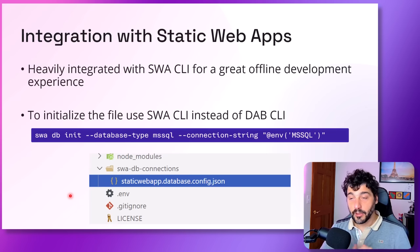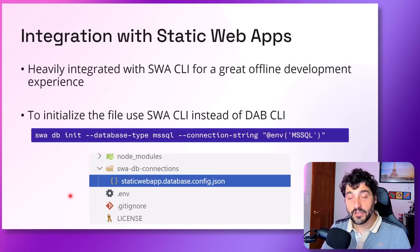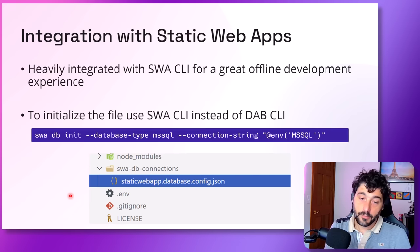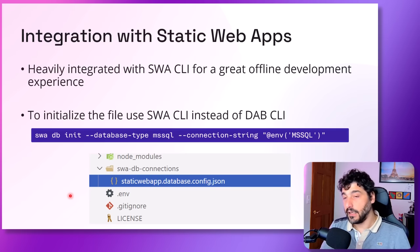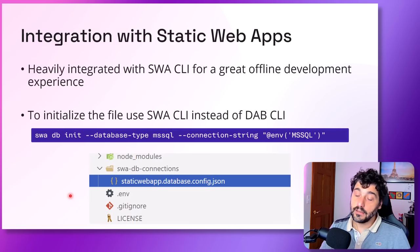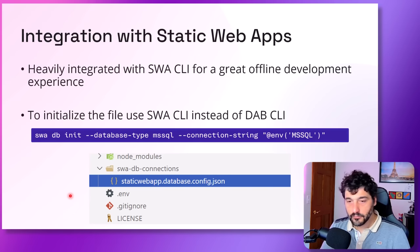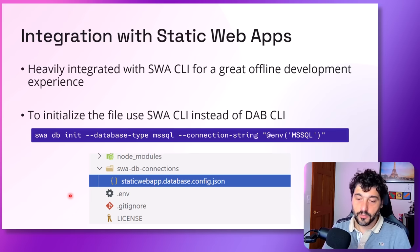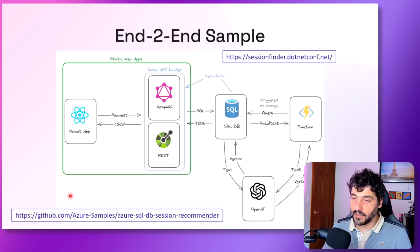To use Data API Builder with Static Web Apps, we did an integration with the SWA CLI, so you can do everything from the SWA CLI. Just run swa db init to initialize the Data API Builder configuration file — specifically built to work well with Static Web Apps — and then continue using the dab CLI as before. Nothing has changed; you just point to this configuration file and add entities as usual.